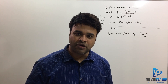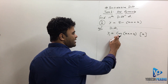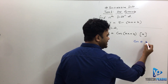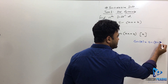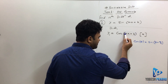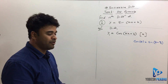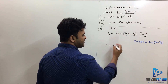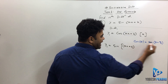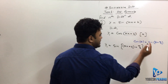Our target is not just one differentiation but the nth differentiation, so we need to find a pattern. I'll use the formula that cos θ equals sine of θ plus π/2. My θ here is ax plus b, so I can write cos(ax+b) in terms of sine. Therefore y1 equals sine of ax plus b plus π/2, multiplied by a.